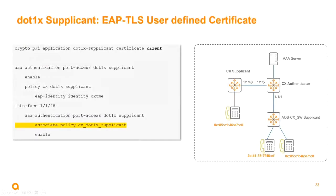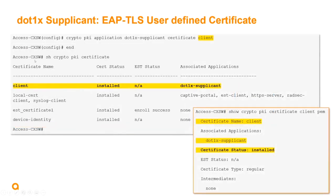For the user-defined certificate demo, you must ensure the crypto PKI application dot1x certificate is attached. Verify using 'show crypto pki certificate' that the user-defined certificate is installed and the associated application is dot1x supplicant. Confirm the certificate is valid and correctly associated before proceeding.